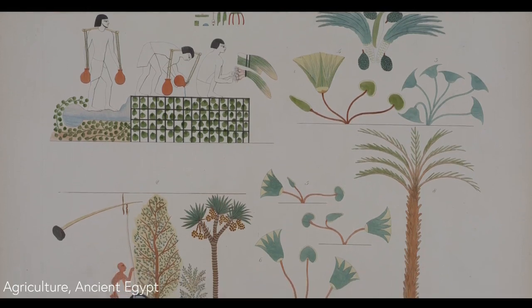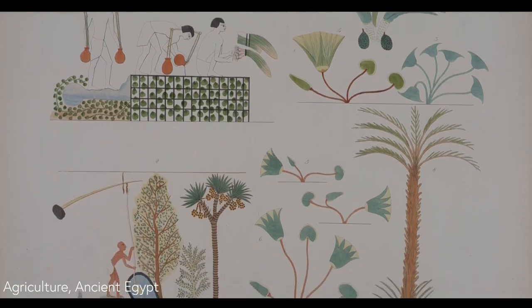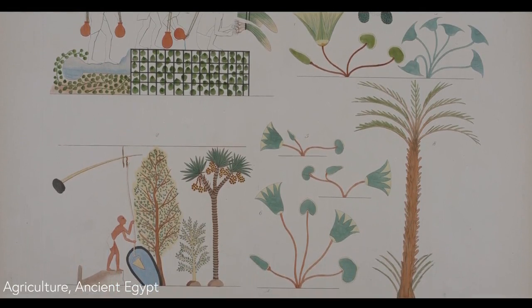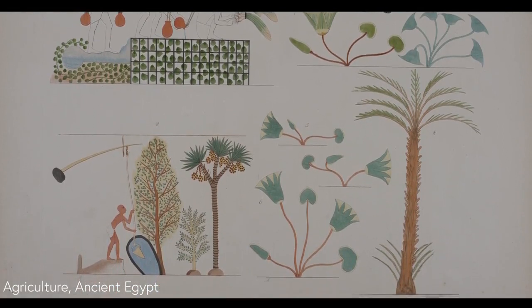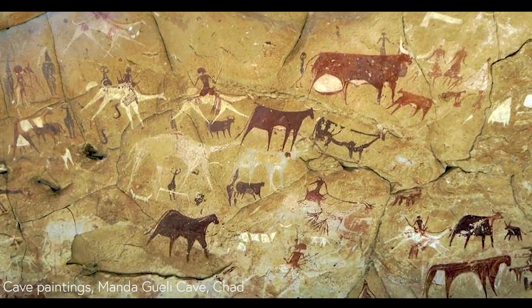For most of human existence, estimated to be about 200,000 years for our species, and for almost all of the period of civilization — dated at about 10,000 years of life with sedentary villages and farm communities — most people have been engaged in the basic process of finding or growing food to stay alive.